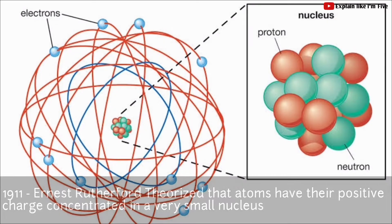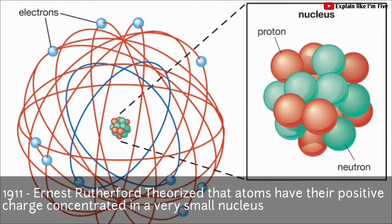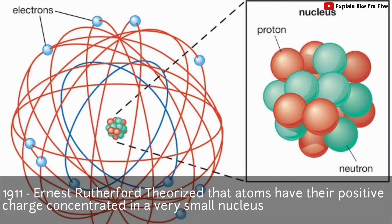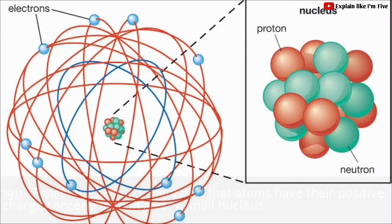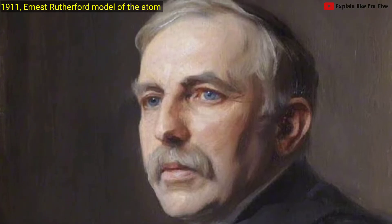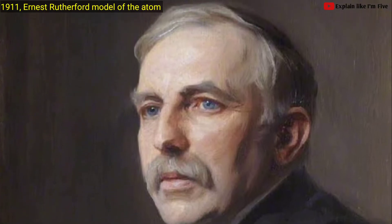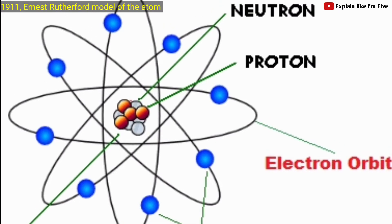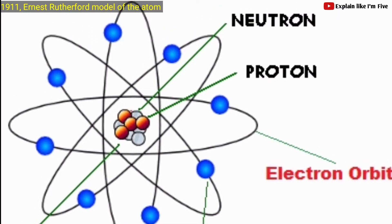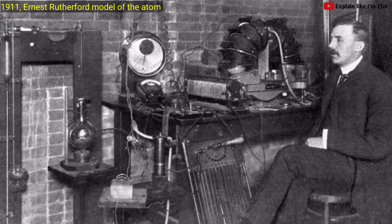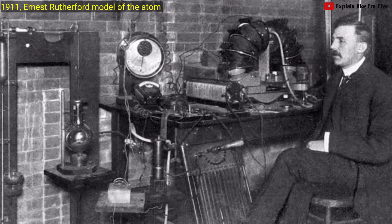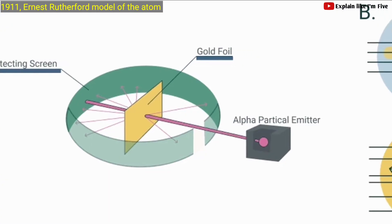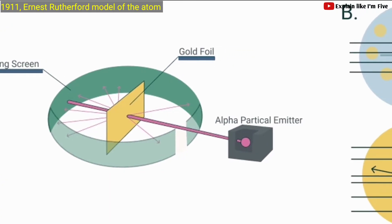Later on in 1911, Ernest Rutherford theorized that atoms have their positive charge concentrated in a very small nucleus. He pioneered the Rutherford model of the atom with his discovery and interpretation of Rutherford scattering in his gold foil experiment. He also performed the first artificially induced nuclear reaction in 1917, in experiments where nitrogen nuclei were bombarded with alpha particles.